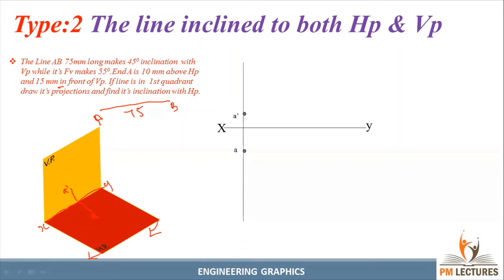From A, draw a horizontal line. Mark with a protractor 45° inclination with VP. VP inclination is visible in top view, below the XY line. From point A, mark 45° and draw 75mm. Name it B1.